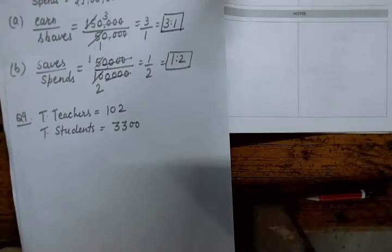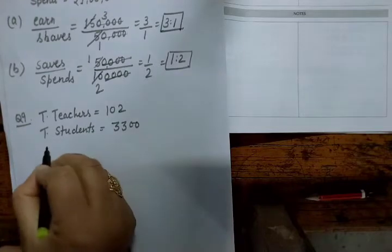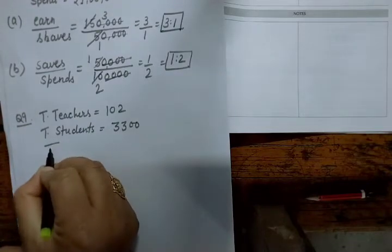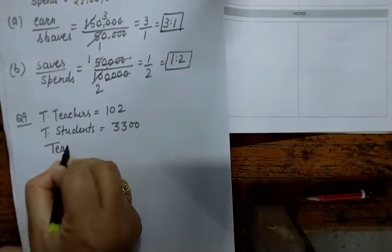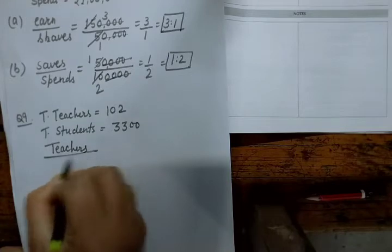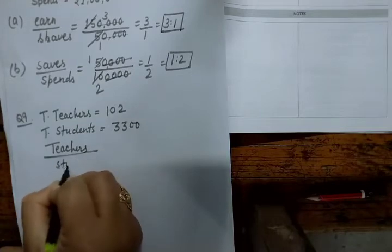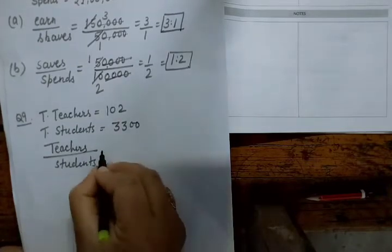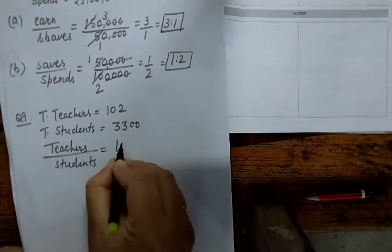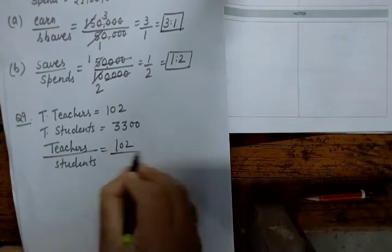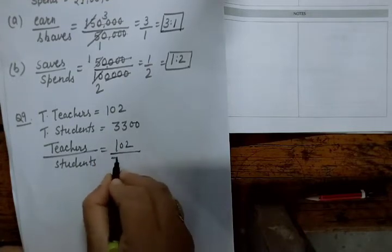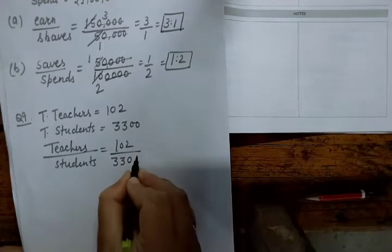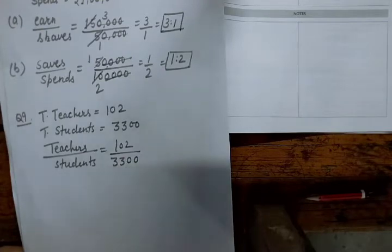Find the ratio of the number of teachers to the number of students. So the ratio is teachers to students — that is 102 upon 3,300. Now we cancel to simplify.